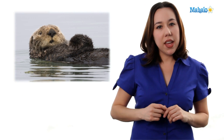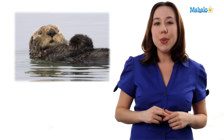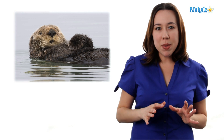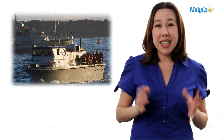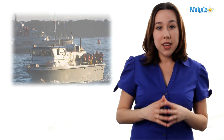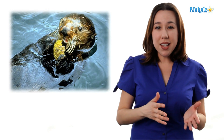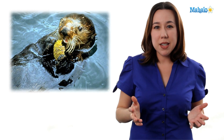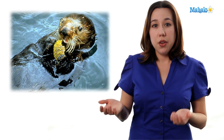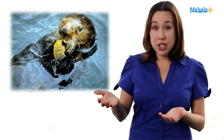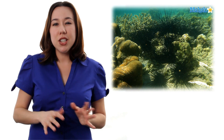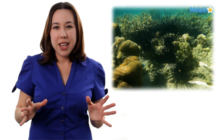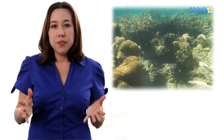One example is the California sea otter. The California sea otter was almost hunted to extinction. When that happened, scientists and fishermen started to see a collapse in this ocean environment. You see, sea otters are one of the only organisms that eat sea urchins. Sea urchins eat kelp, so with no sea otters, the sea urchin population exploded and started to eat all of the kelp.